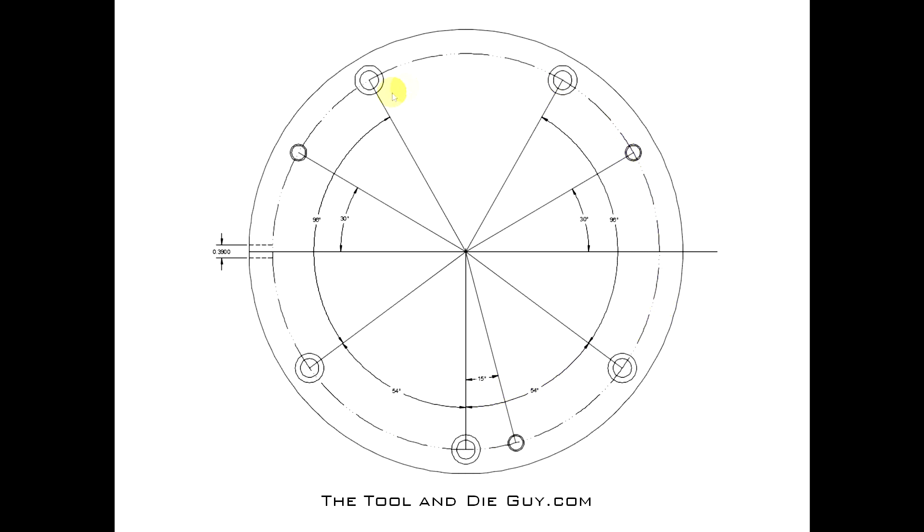Usually on most bearing caps you would find that this would be an equal amount of holes on a bolt circle. In this case they're not. They're 54, 54, 96, and 96 degrees. I believe this customer does this so nobody can buy a stock bearing cap. They make their stuff a little different. I get that.